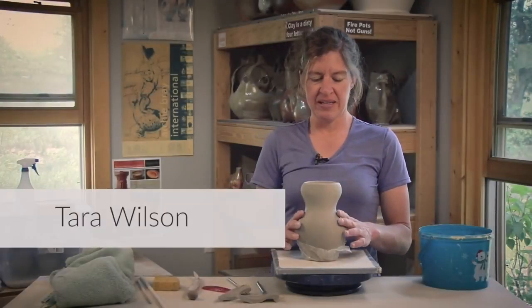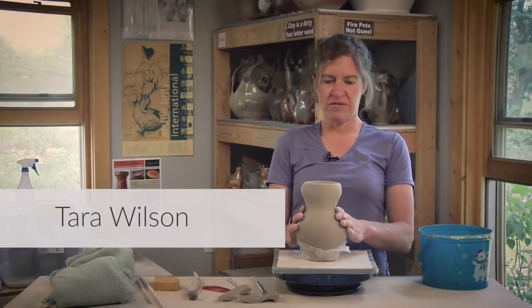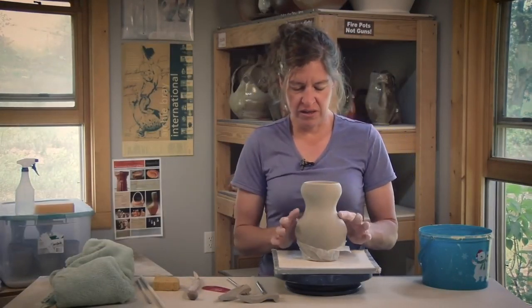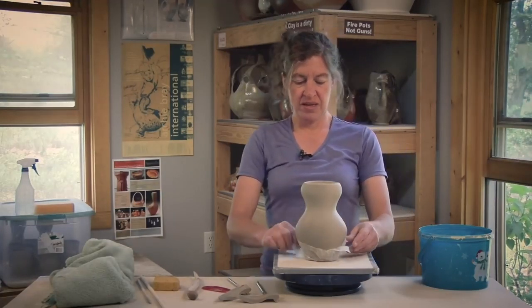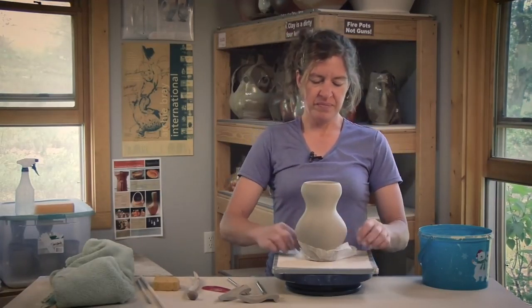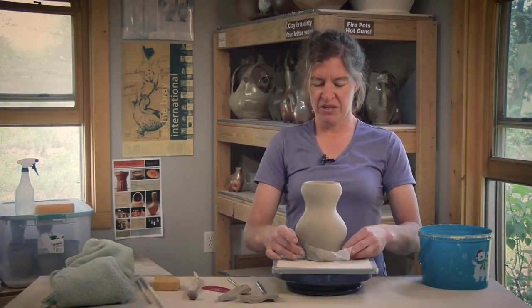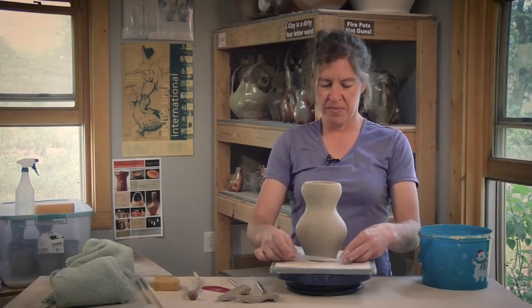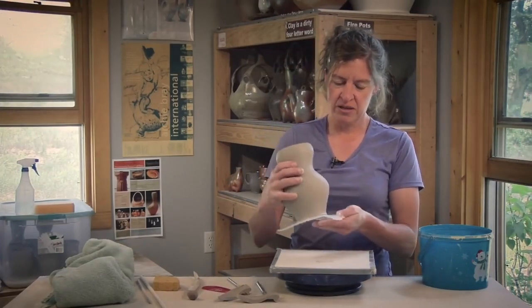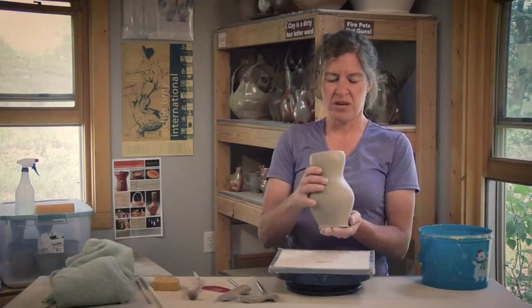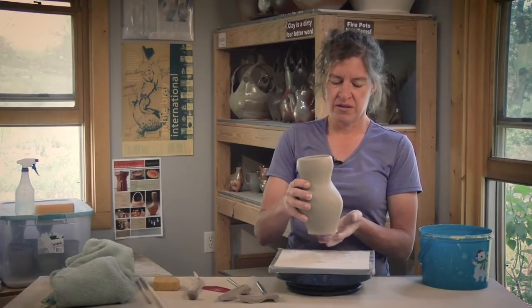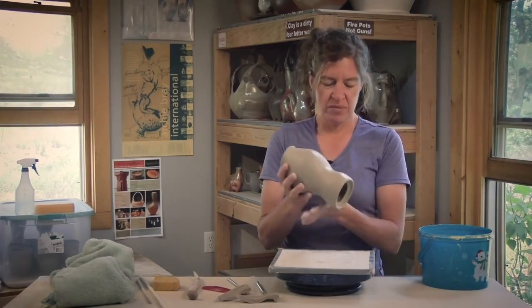Once the pot has gotten to a much stiffer leather-hard stage so that it holds its shape in these hips that we just created, then I'm going to put the feet on the pot. One trick I found is to just cover the bottom of the pot with a little bit of plastic. A lot of times I'll also put them back on one of those plastic bats so that the foot stays much damper than the rest of the pot.